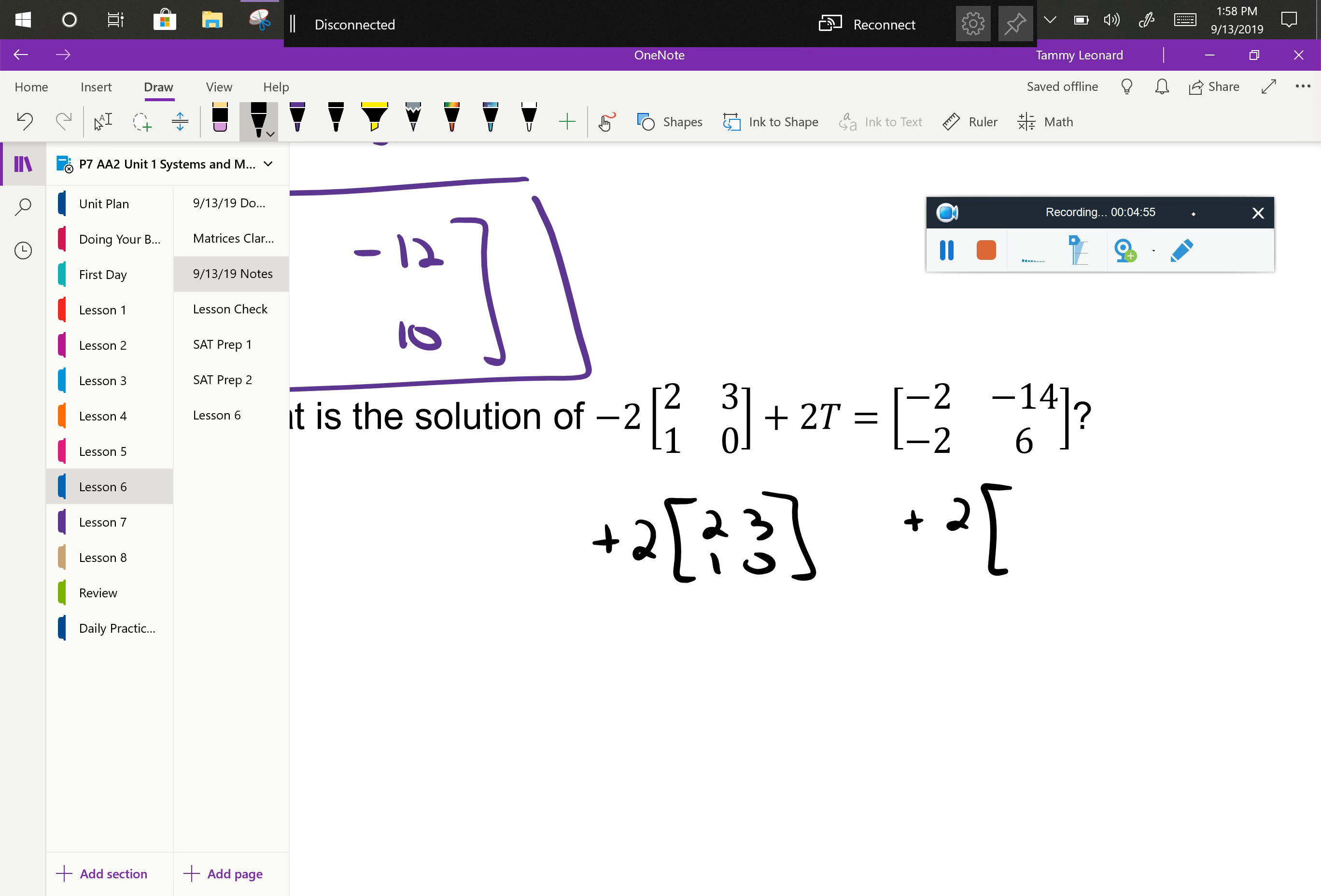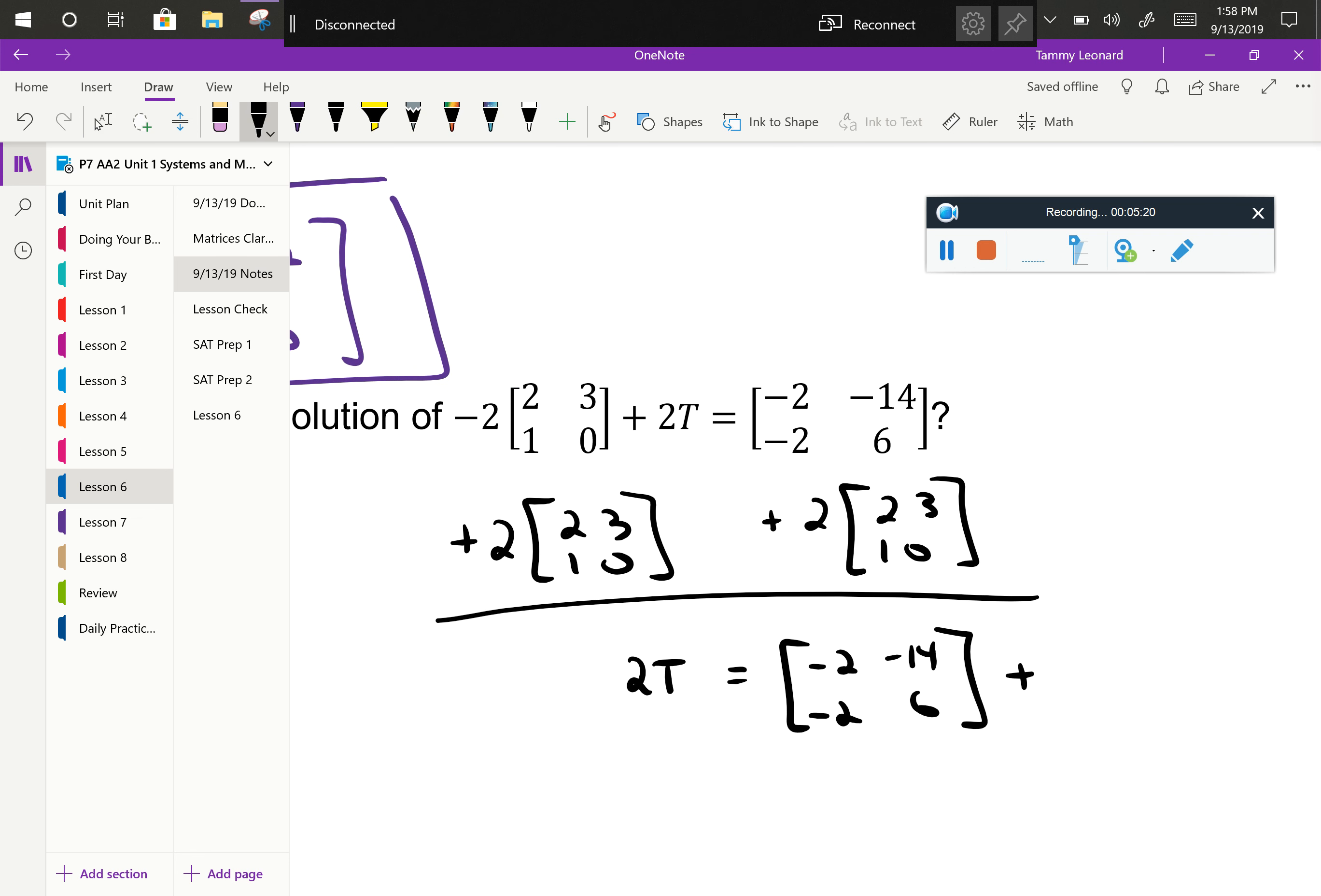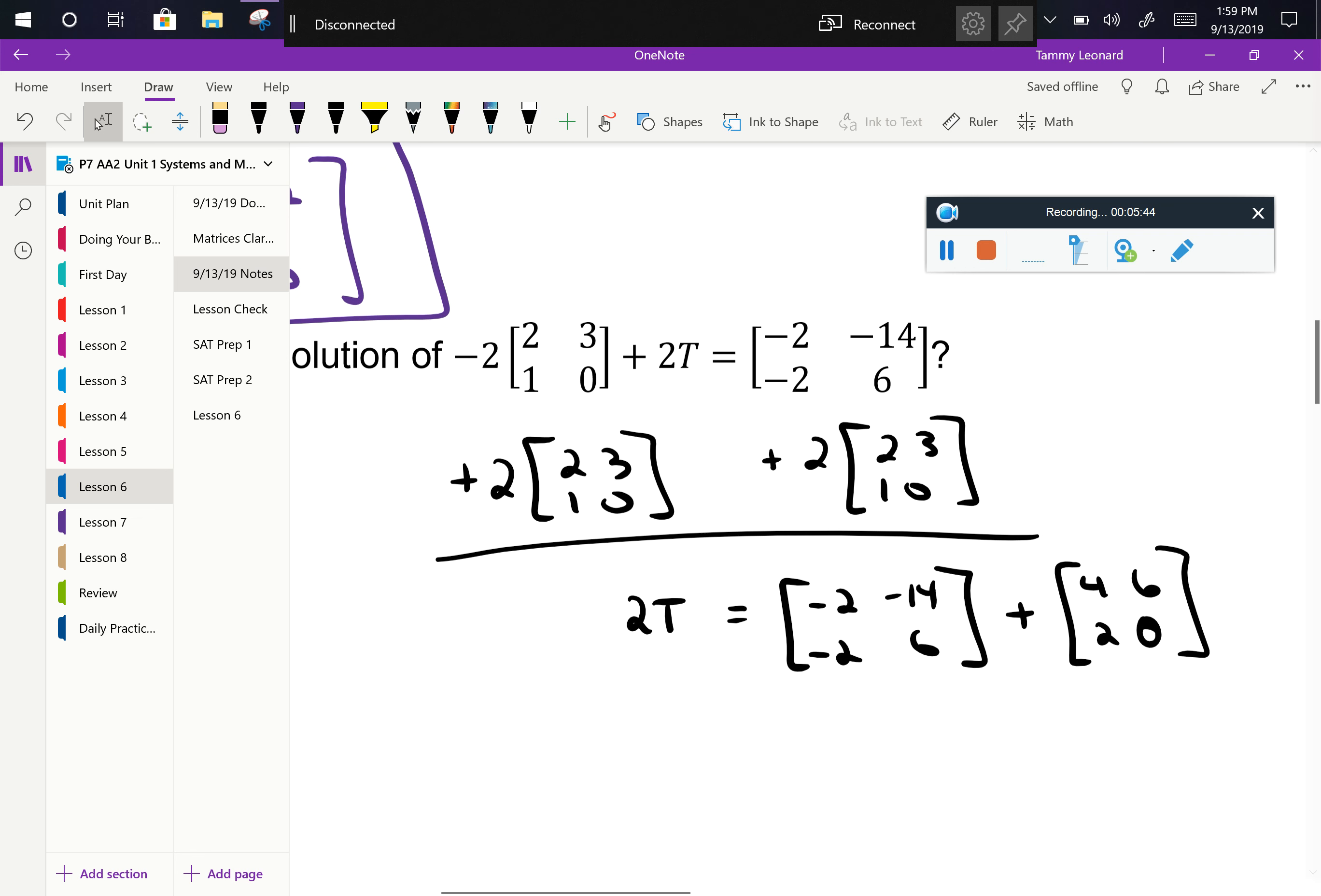Now if I was doing this out all by myself, I would probably not write that step out. But given that this is a note sheet where I'm trying to be abundantly clear about what I'm doing, I'm going to show every step of the stuff that I do. So on the left, I now just have two times the matrix T is equal to the matrix negative 2, negative 14, negative 2, 6. Now I might just combine some steps here and do that scalar multiplication rather than rewriting that thing right now. So if you do the scalar multiplication, what does that second matrix become? Sarah? Yeah. 4, 6, 2, 0.